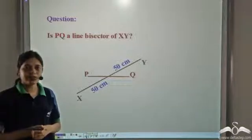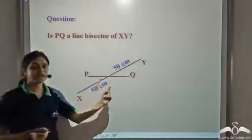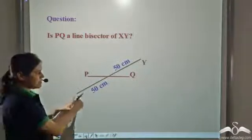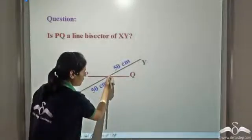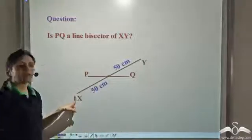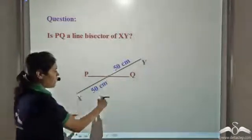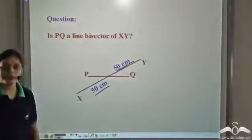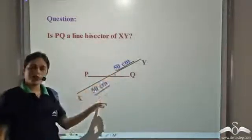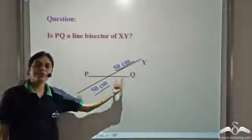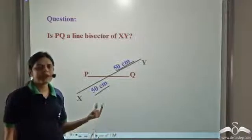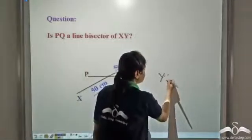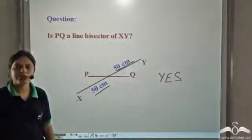Can you answer this question: is PQ a line bisector of XY? PQ meets XY at a point where the length of one part is 50 cm and the length of the other part is also 50 cm. Since PQ divides XY into two equal parts, PQ is a line bisector of XY.